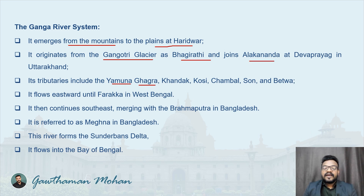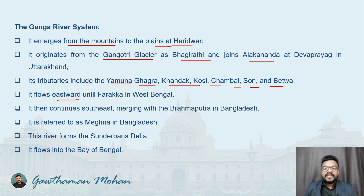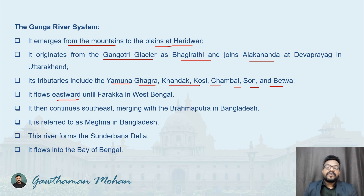From Gaumukh it flows as the Bhagirathi, and later joins the Alaknanda at Devaprayag. Its tributaries are the Yamuna, Ghaghra, Gandak, Ghosi, Chambal, Son, and Betwa. The Ganges flows eastward until Farakka in West Bengal, then continues southeast, merging with the Brahmaputra in Bangladesh.